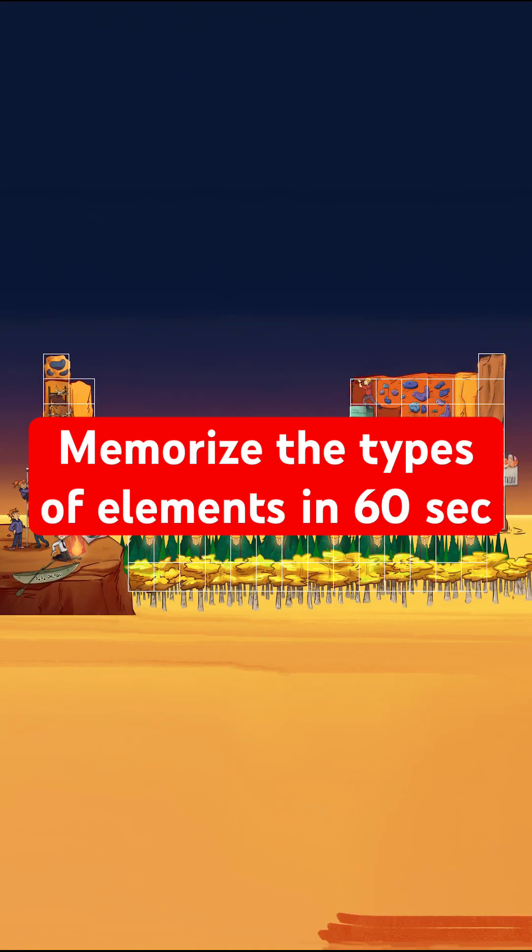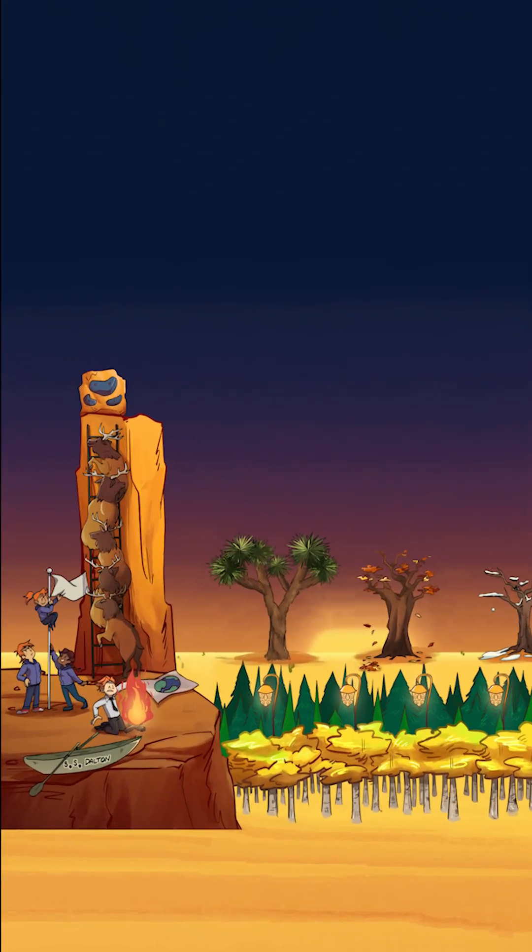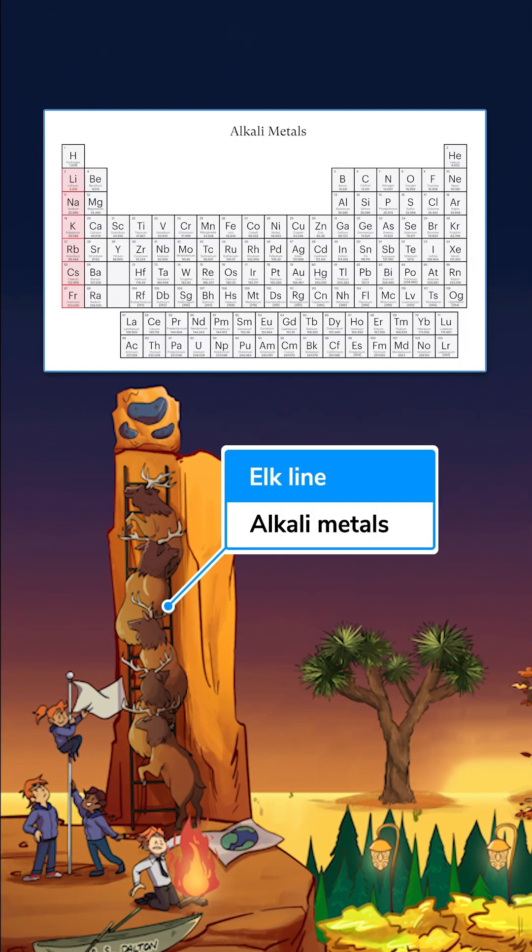I'm going to teach you the types of elements in 60 seconds in a way you'll never forget. The elements in group 1 are called alkali metals, so we've got elk in a line to remind you of alkali.